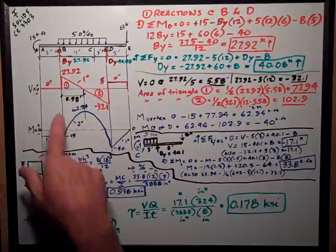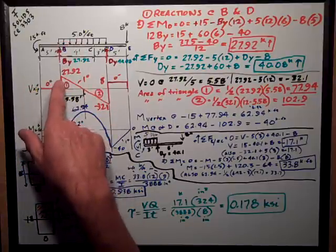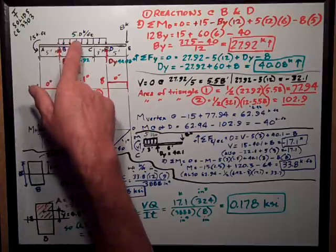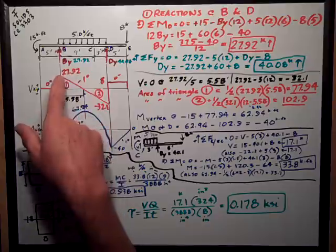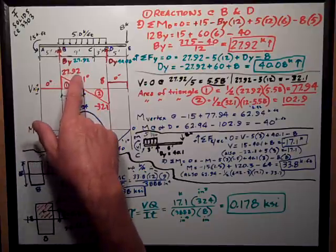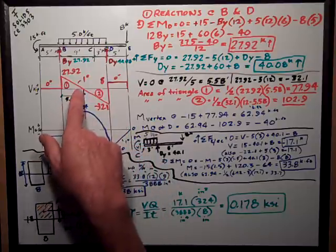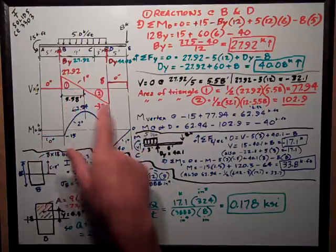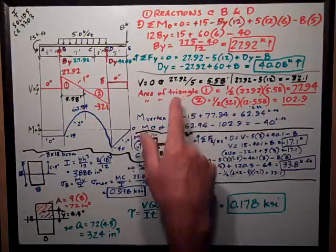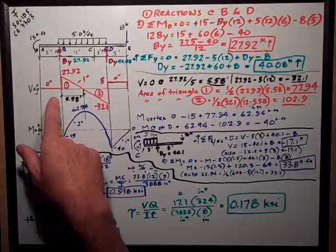Then it starts declining. Remember that the slope of the shear diagram is equal to the value of the loading diagram. So I have a 5 kips per foot, so it starts declining at 5 kips per foot from 27.92 down to all the way at this point over here. I want to know where that point is, where it crosses zero. And so I just divide 27.92 by 5 to get 5.58 feet out from point B.